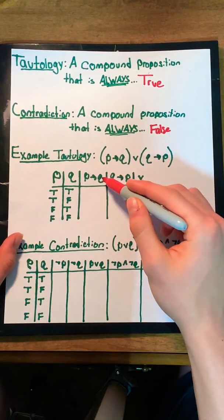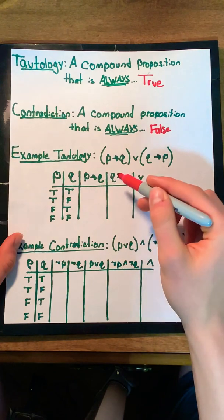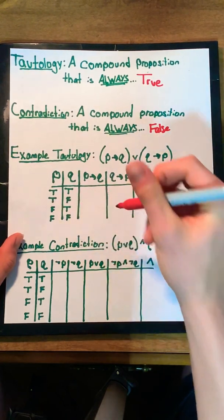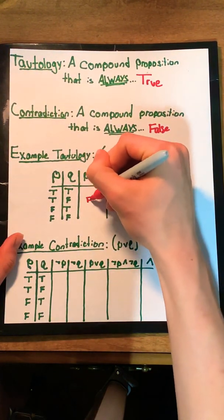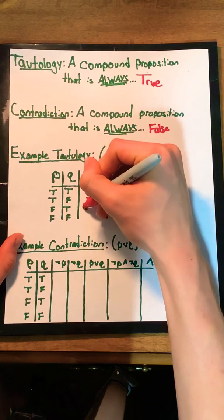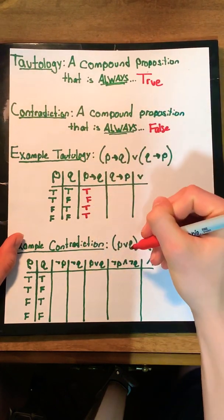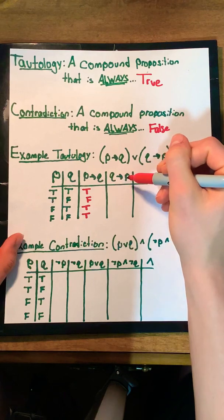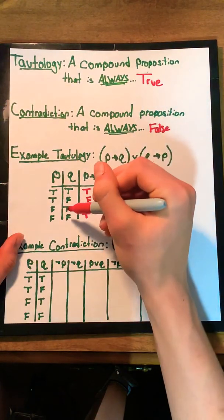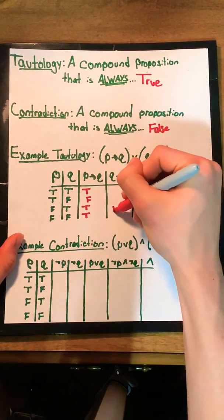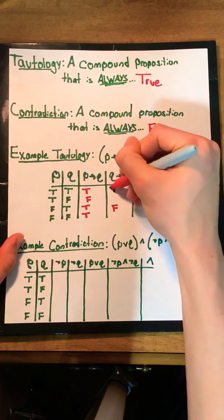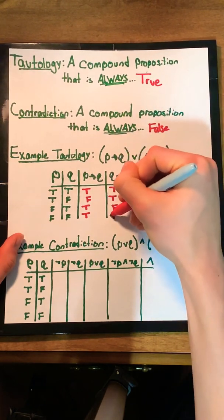For if p then q, we'll remember the only way to make an if then statement false is when we have true or false. So we'll have false here, and then true for all their assignments. This works the same way for if q then p. We just note that the one case where we have a true and then false is right here. So we have a false, and then true, true, and true.